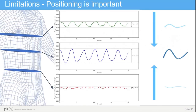In this slide, we show you the limitations of the sensor, and we want to point out that the positioning is very important. We do have a higher peak-to-peak amplitude if we place the sensor in the abdominal position compared to the thoracic position, which is shown in the first two plots, where we can see a higher peak-to-peak amplitude in the blue signal compared to the green signal.